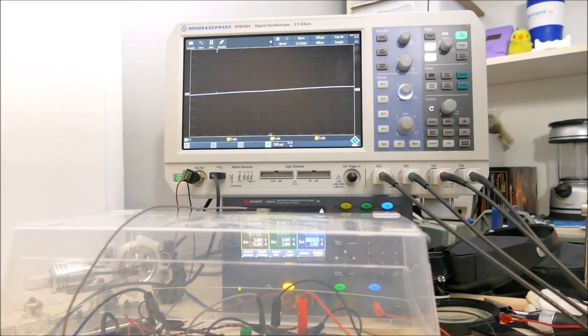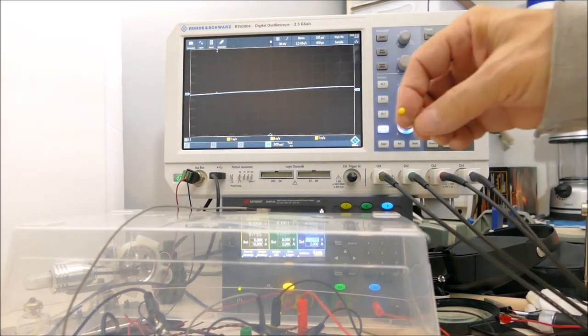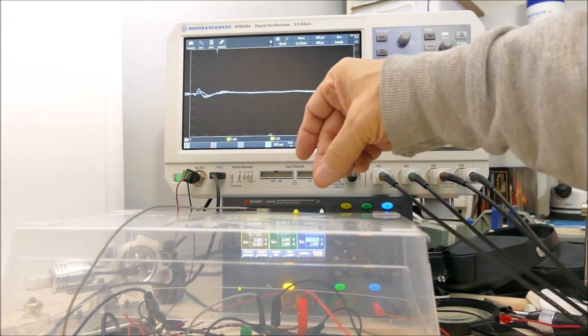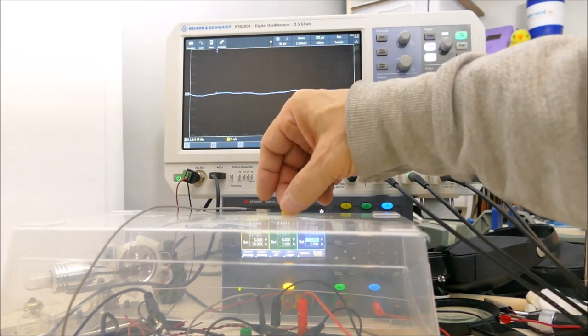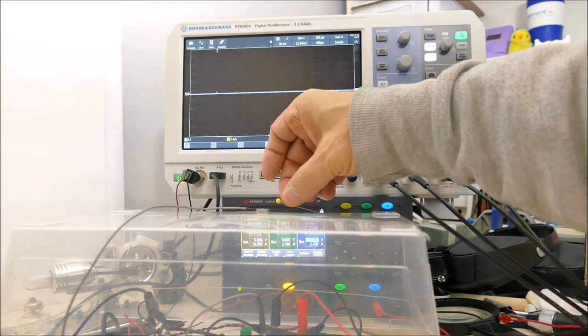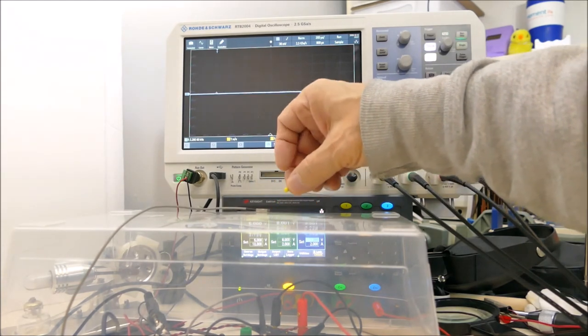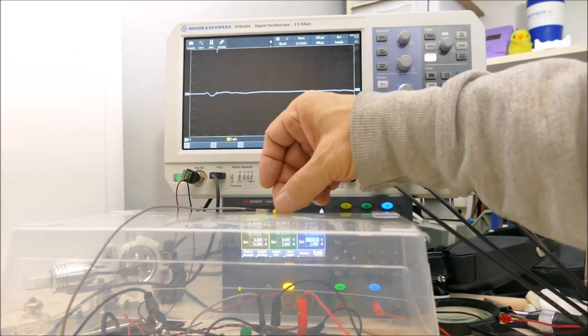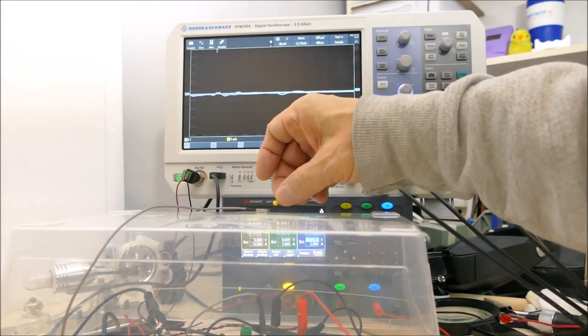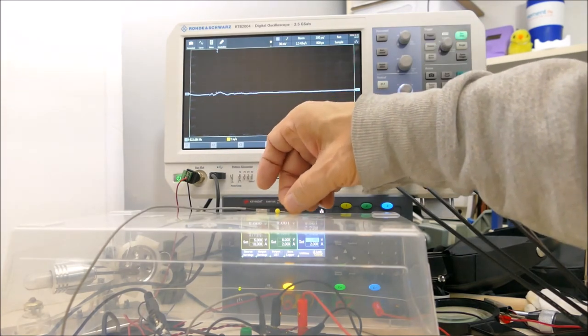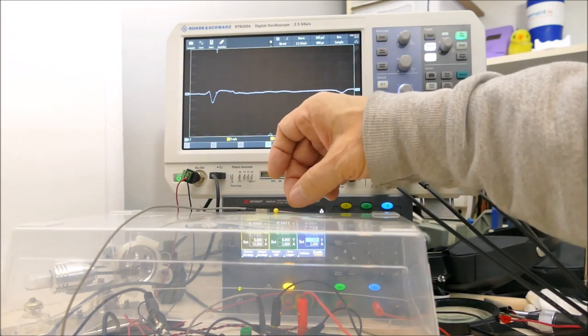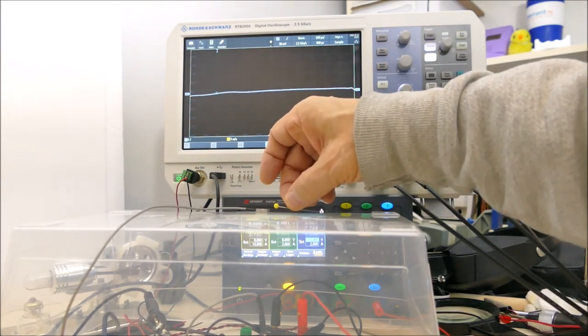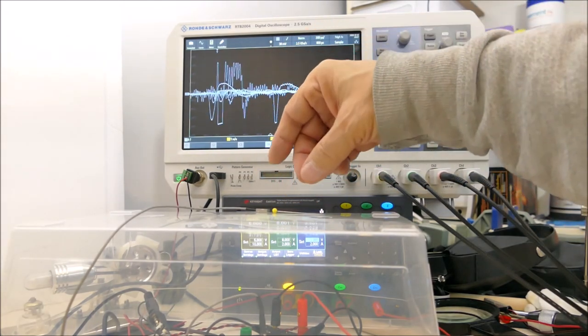And what I want to do is test the proverbial pin drop to see if it can detect a pin drop. So this is a little pin and it definitely detects that. Just dropping it from a few millimeters can give a huge signal.